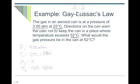So I need to rearrange my formula up here for P2. So I'm just going to multiply both sides by T2. And I get P1 times T2 over T1, and that's equal to P2. So P1 is 3, T2 is 325, T1 is 298.